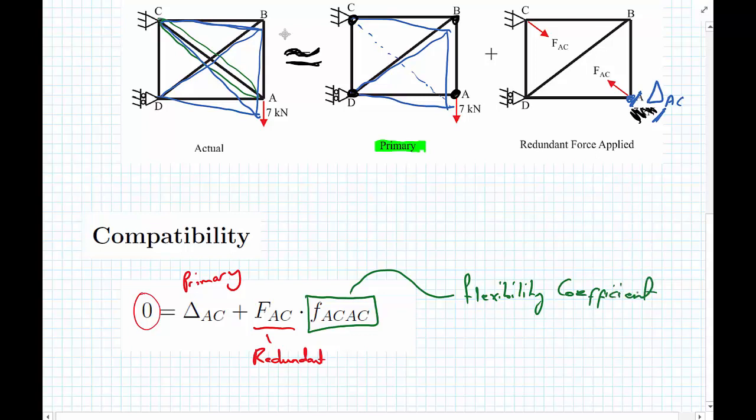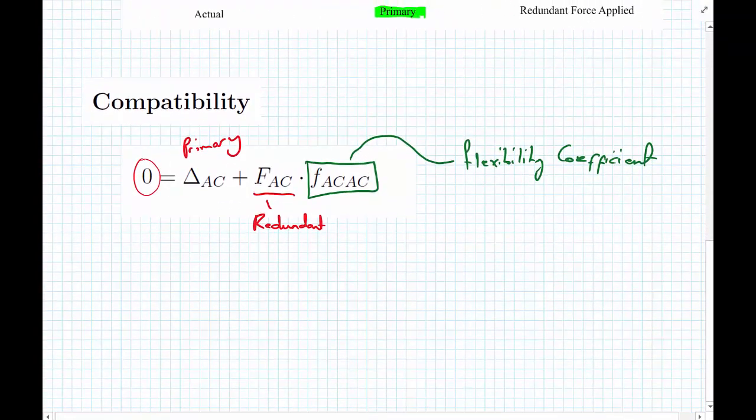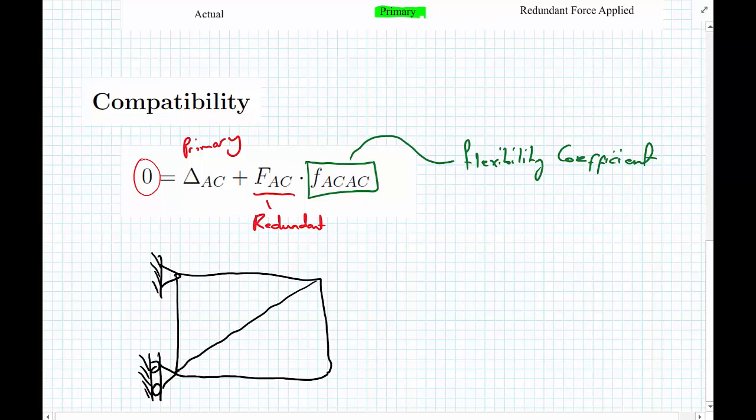This flexibility coefficient is now where we use the ideas from the unit load method. So instead of applying our redundant applied force, we'll remember our redundant structure with exactly the same geometry and exactly the same boundary conditions as we have in our primary structure.